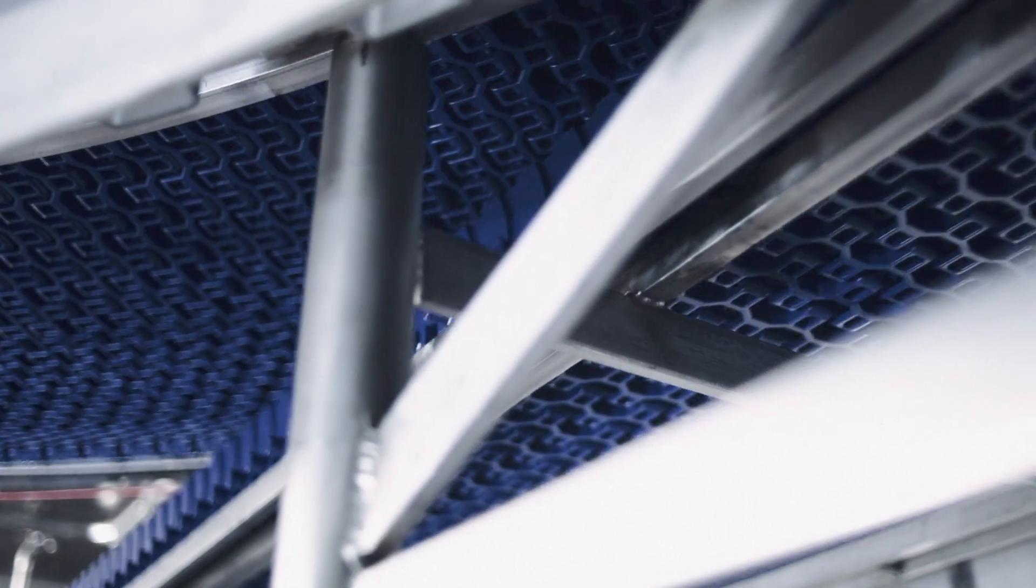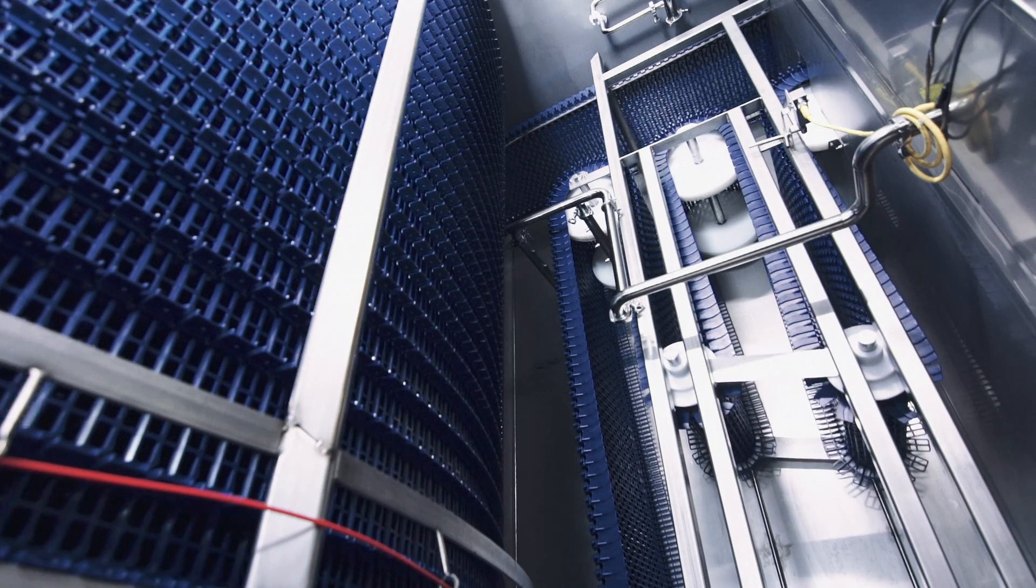Then the self stacking portion of it allows the belt to be far more compact vertically in space so you can put twice as much product, twice as much belting in the same vertical space that you normally would with a tier supported spiral.